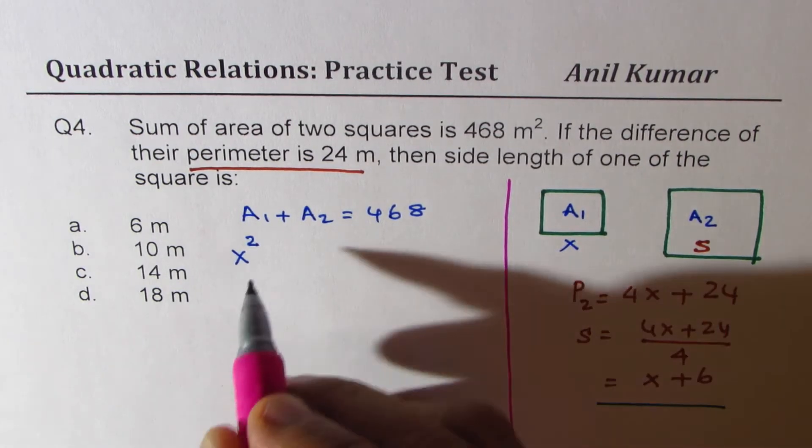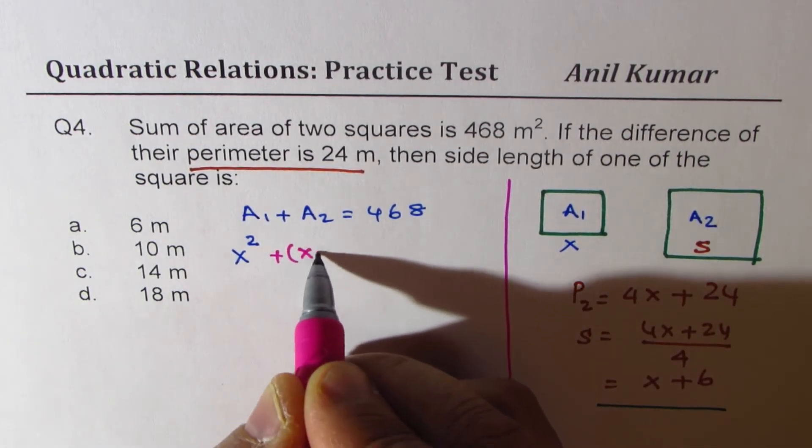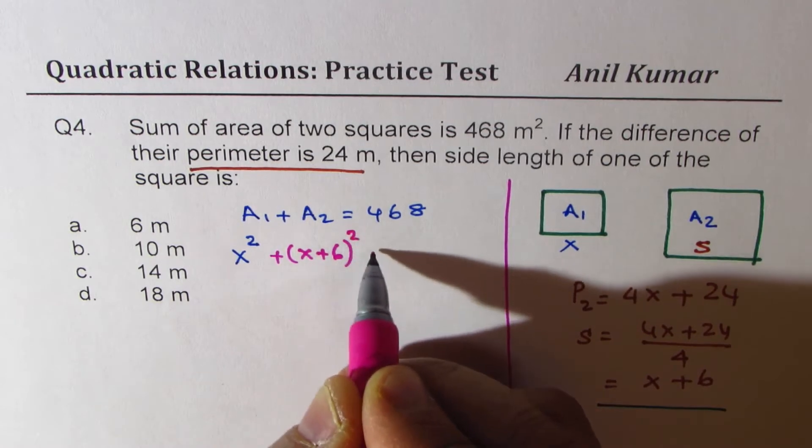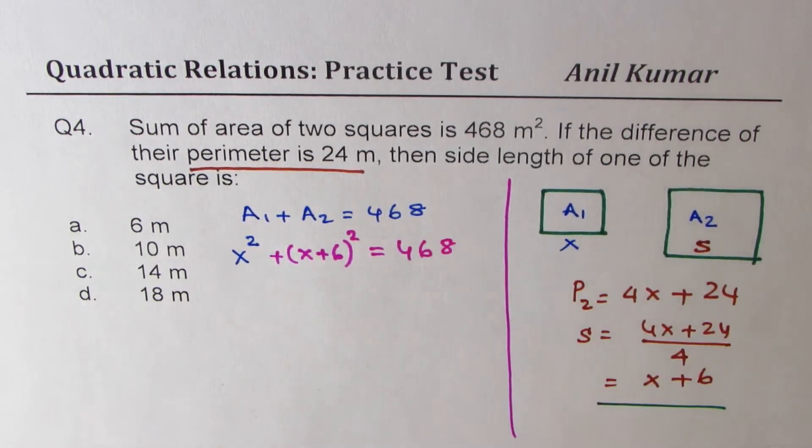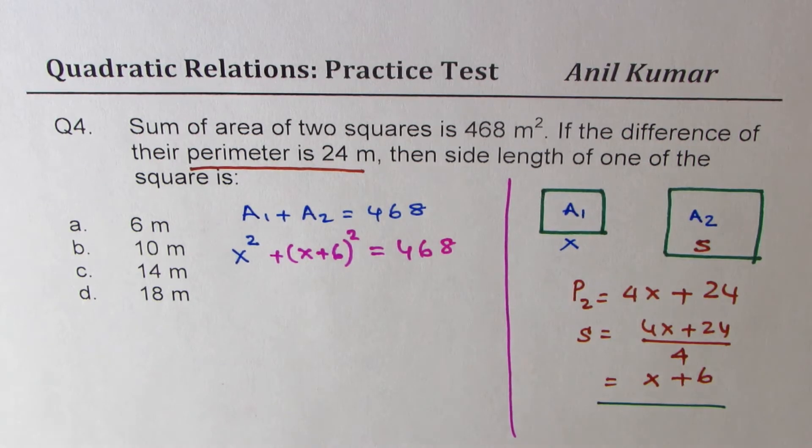So 4x plus 24 divided by 4 gives you the side length x plus 6. So the area will be, you have to add x plus 6 whole square and the equation becomes 468. That is how you actually get your equation. And now you have to solve it to find x.